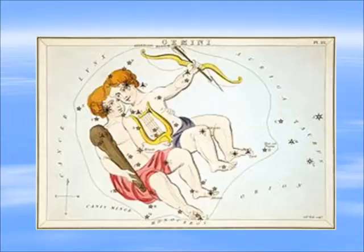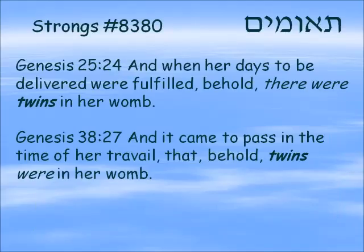The constellation over this month is Gemini, the twins. The word in Hebrew is Te'omim. We see it twice: Genesis 25:24, 'And when her days to be delivered were fulfilled, behold there were twins in her womb,' speaking of Jacob and Esau. And Genesis 38:27, 'And it came to pass in the time of her travail that behold twins were in her womb,' speaking of Tamar — the twins Peretz and Zerach.